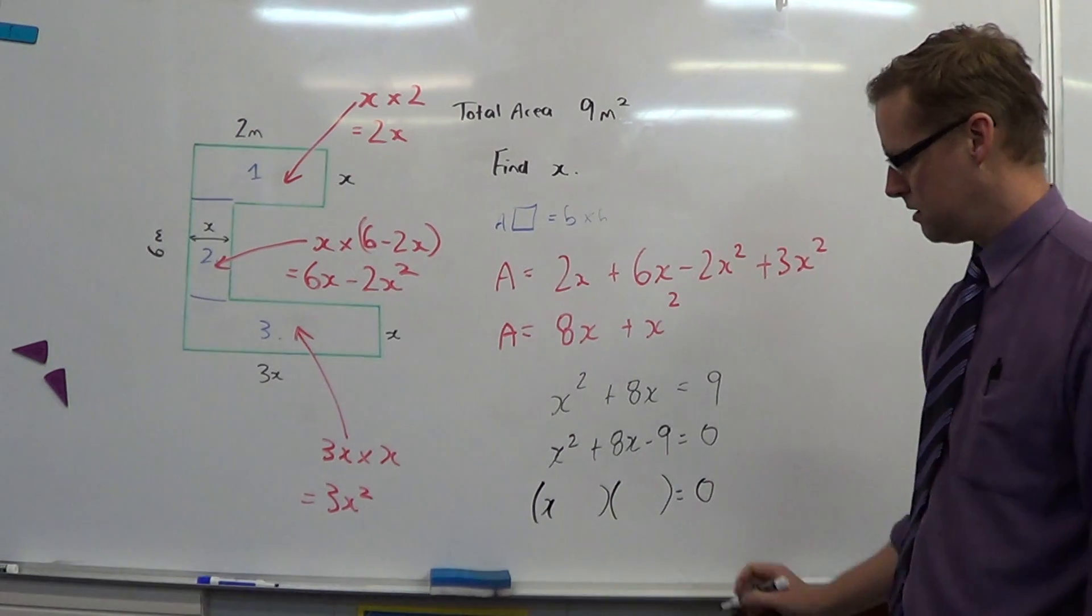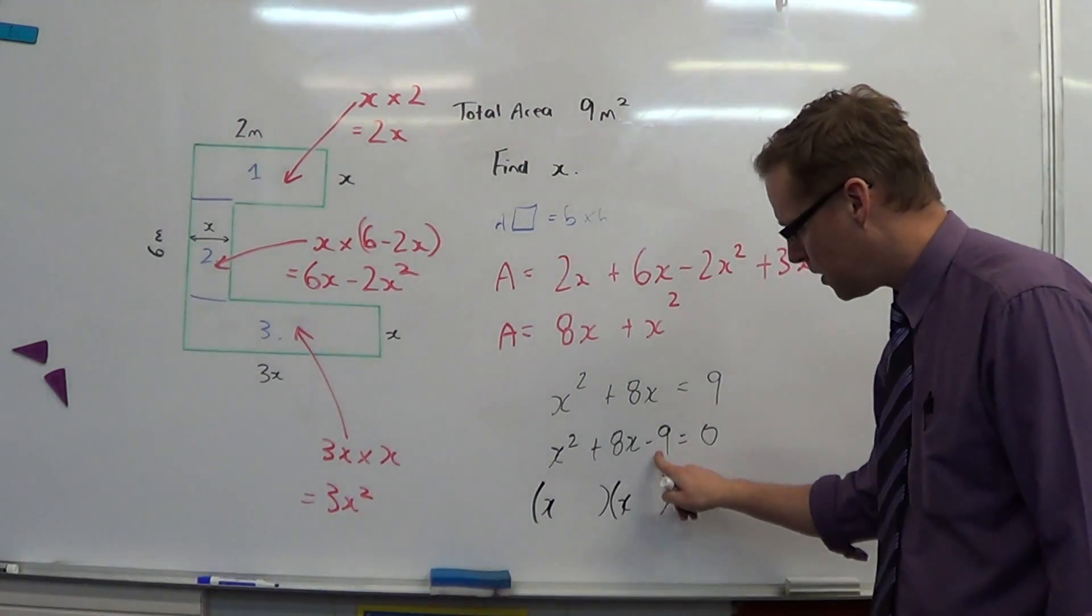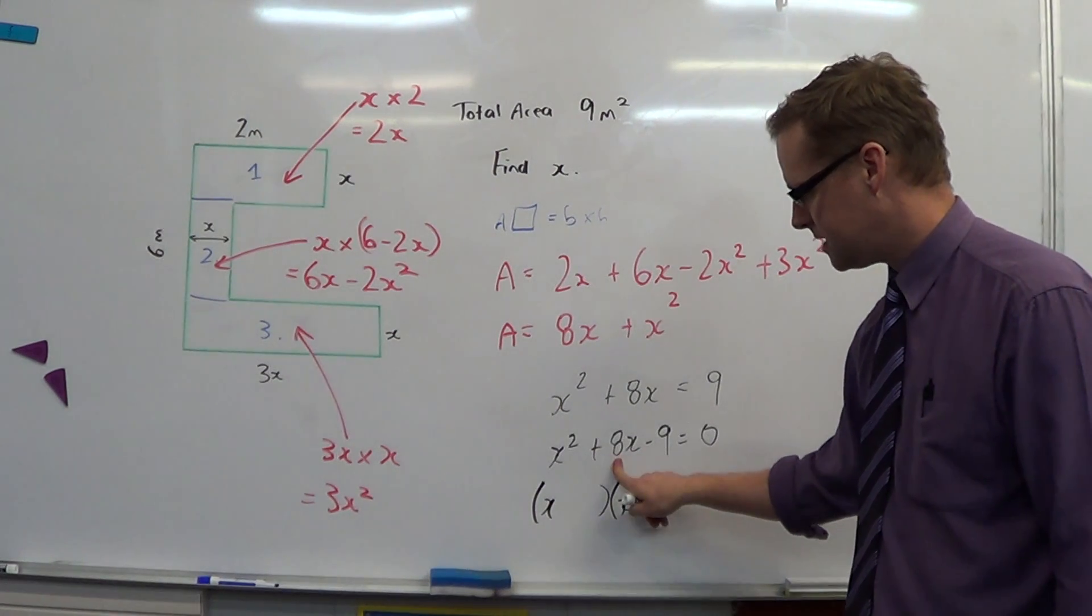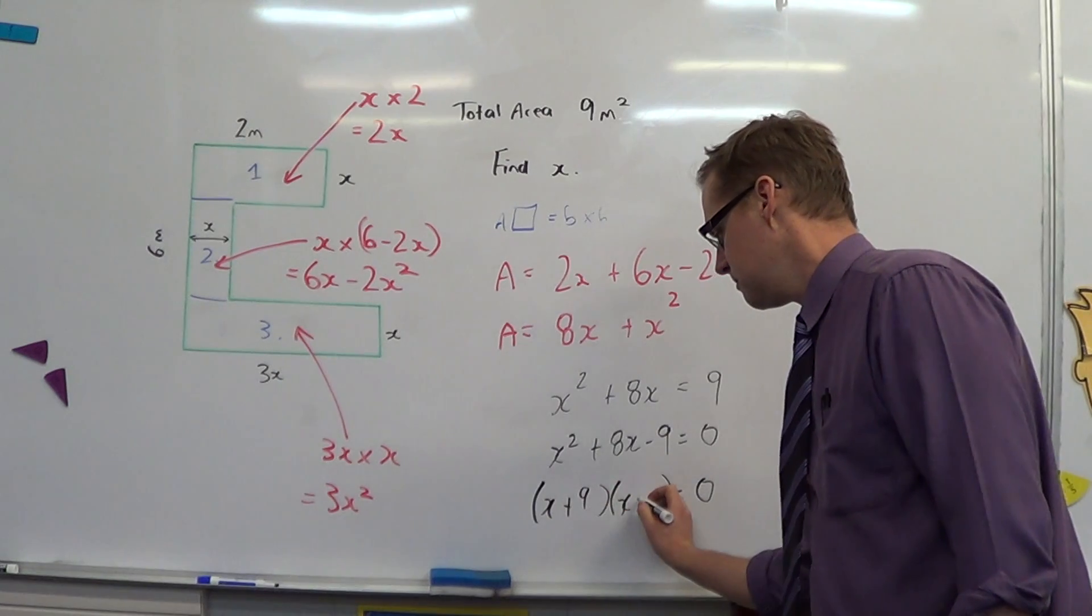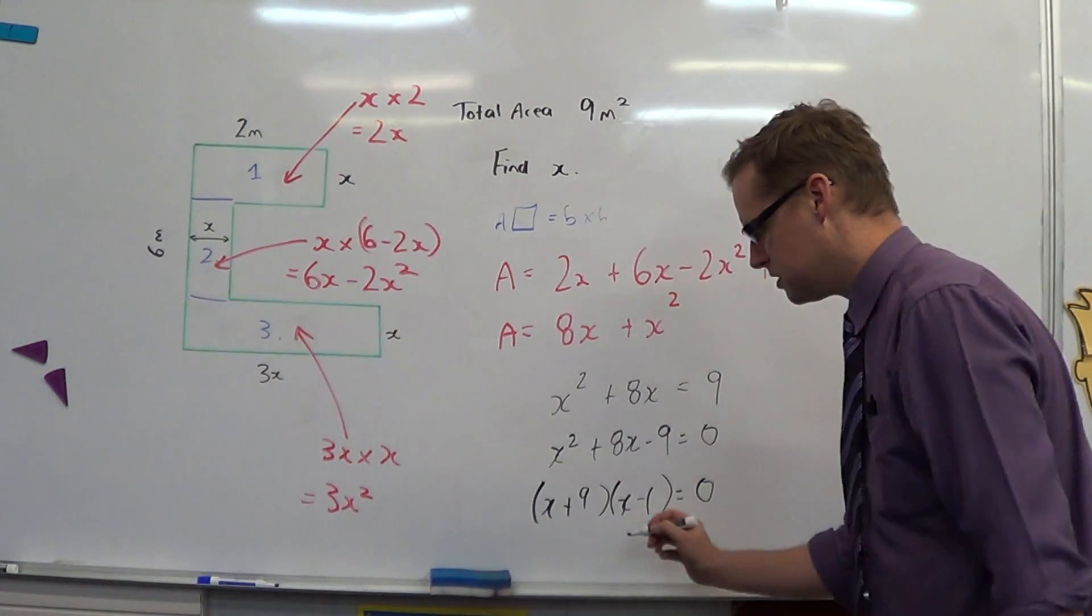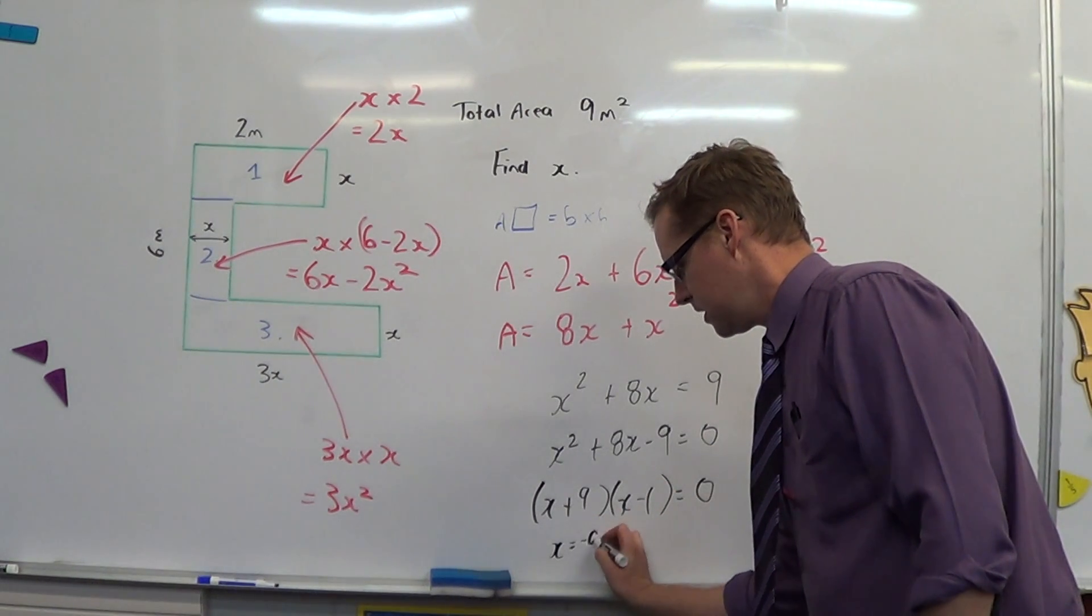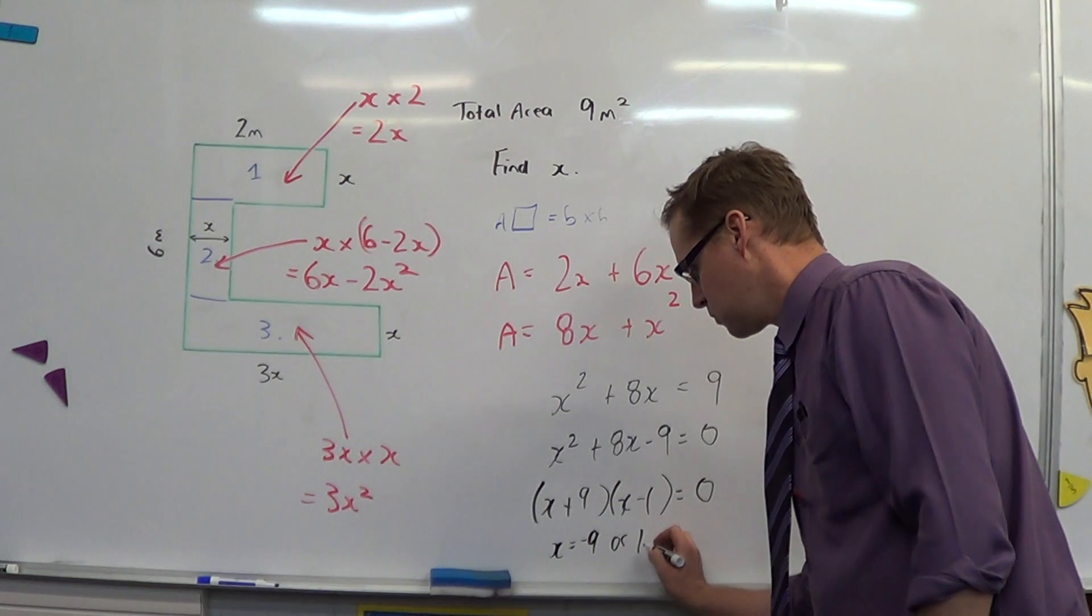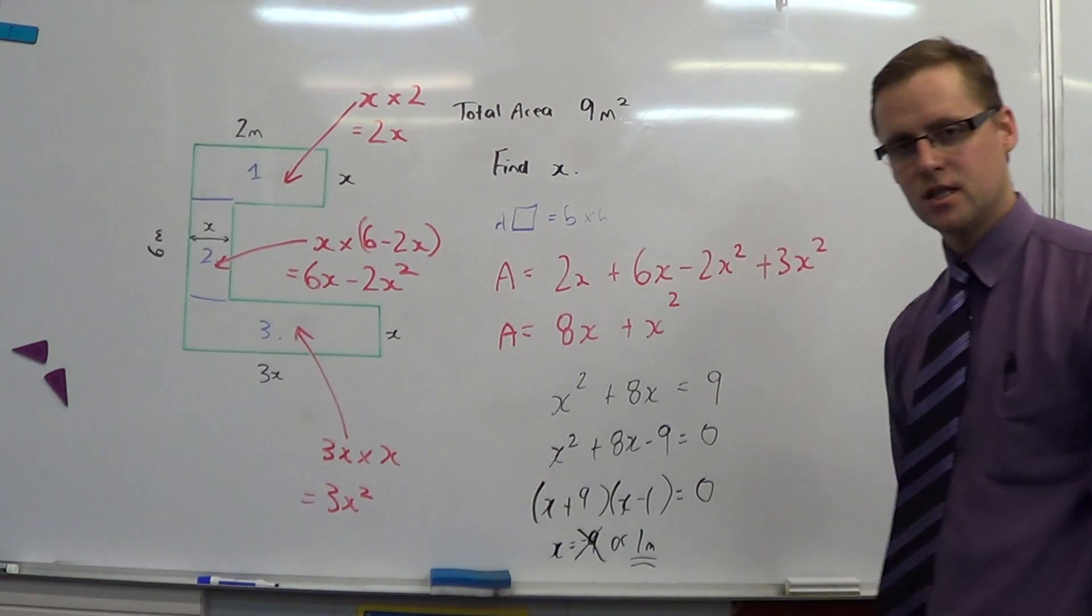I have a quadratic. Two values of x. What multiplies to minus 9 but adds up to positive 8? Plus 9 and minus 1. Two opposite values. I'm going to therefore have x is minus 9 or x is 1 metre. Minus 9 is impossible. 1 is our excellent solution.